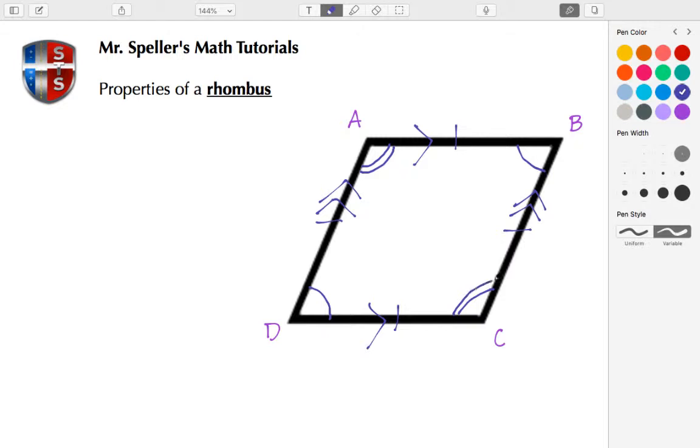We also have a couple of diagonals, so let's draw this diagonal from angle D to angle B and the other diagonal from angle A to angle C.